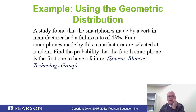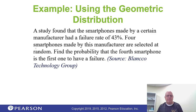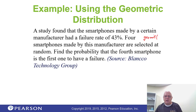Here's an example. We found that the failure rate was 43%. Four smartphones are made by the manufacturer, selected at random. Find the probability that the fourth smartphone is the one to have a failure. Remember, since this is the geometric distribution, we're going to go to second distribution in the calculator and fill in the blanks — we give it the probability for each one, the x which in this case is 4, and the failure rate is 0.43.